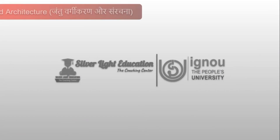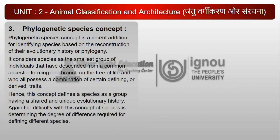3. Phylogenetic Species Concept: The Phylogenetic Species Concept is a recent addition for identifying species, based on the reconstruction of their evolutionary history or phylogeny. It considers species as the smallest group of individuals that have descended from a common ancestor, forming one branch on the tree of life, and who all possess a combination of certain defining or derived traits. Hence, this concept defines a species as a group having a shared and unique evolutionary history. Again, the difficulty with this concept is determining the degree of difference required for defining different species.